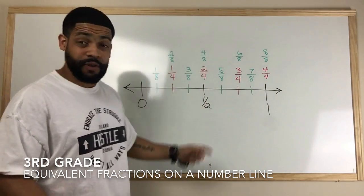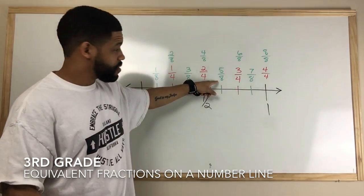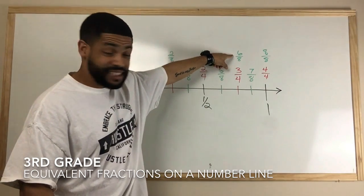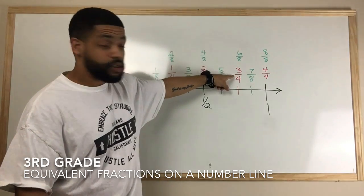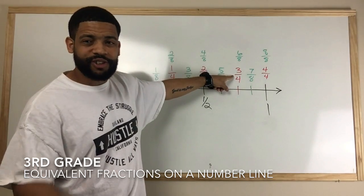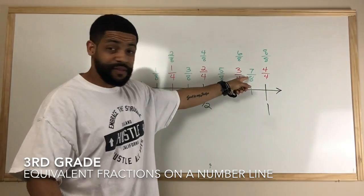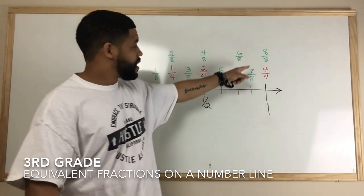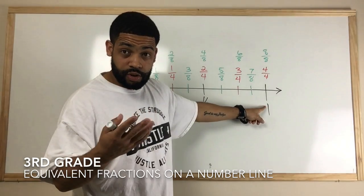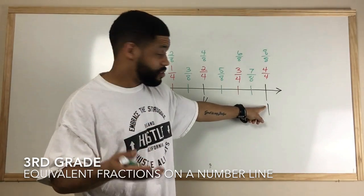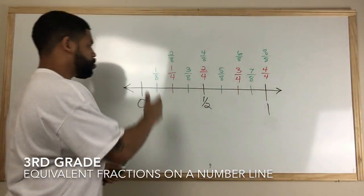Five eighths stands alone. Six eighths is equivalent to three fourths — those two fractions have the same value. Seven eighths stands alone. Then eight eighths, four fourths, and two halves all equal one, so those are all equivalent.